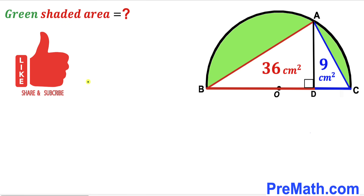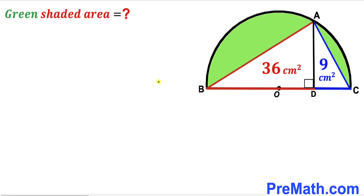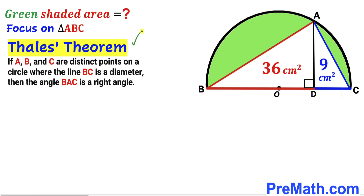Please don't forget to give a thumbs up and subscribe, and please keep in mind that this figure may not be 100% true to scale. Let's get started. Let's focus on triangle ABC and recall the Thales theorem: if ABC are three distinct points on the circle where BC is the diameter, then angle BAC has got to be a right angle — in other words, a 90 degree angle.